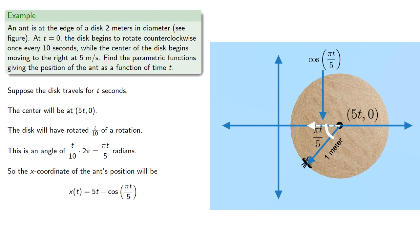Now to get to the ant's position we have to go down this distance, and that's going to be sine of πt/5. So the y-coordinate of the ant's position will be negative sine of πt/5.